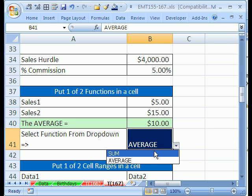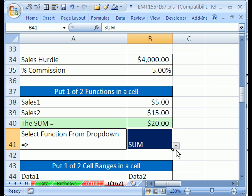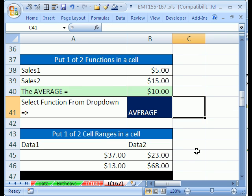Let's try it. Click here, and then sum. There it is. Sum equals 20. The average, the average equals 10. So that's one of two functions.